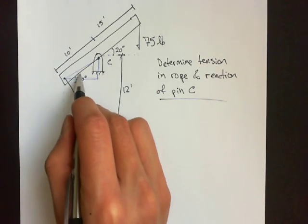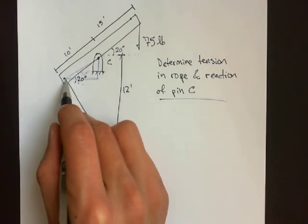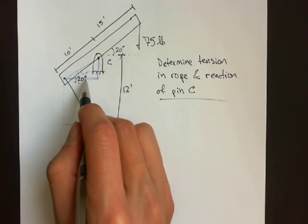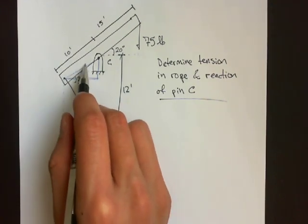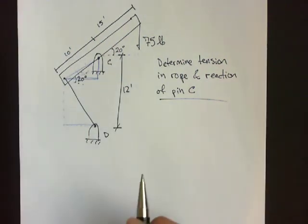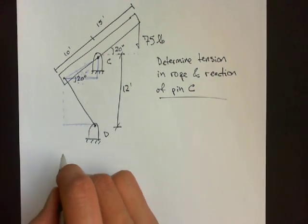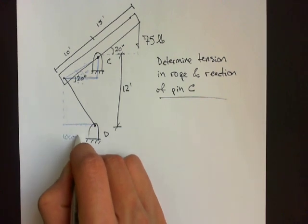Okay, and this angle is 20 degrees. So to find this, it's adjacent over hypotenuse, where 10 is our hypotenuse. So this is equal to 10 cosine 20.